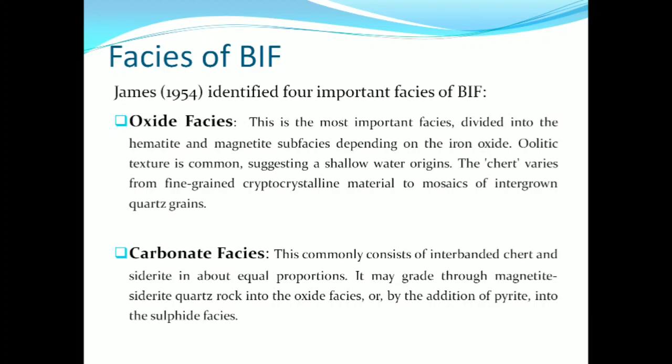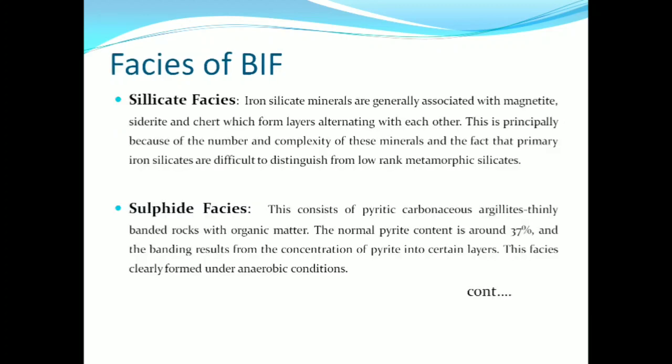The second is carbonate facies, which commonly consists of interbanded chert and siderite in about equal proportion; it may grade through magnetite-siderite-quartz rock into the oxide facies, or by the addition of pyrite into the sulfide facies. The third is silicate facies, where iron silicate minerals are generally associated with magnetite, siderite, and chert forming alternating layers. This is primarily because of the number and complexity of these minerals and the fact that primary iron silicates are difficult to distinguish from lower-rank metamorphic silicates.